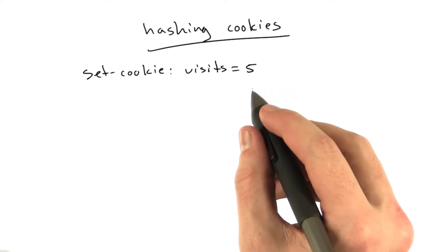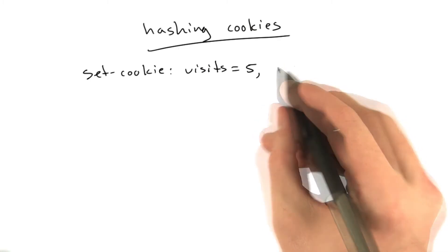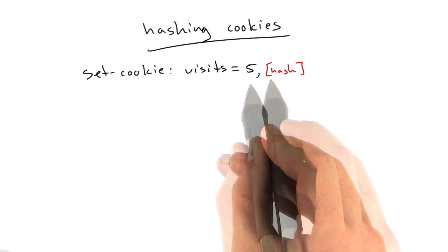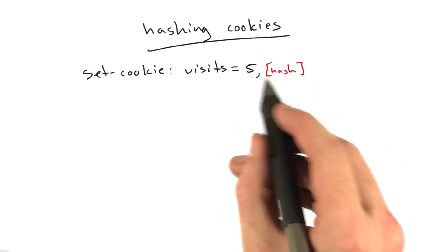So we're going to send something like this instead. Set cookie equal 5. We're going to add something on the end of this, so we'll add a comma, and then we're going to add a hash of the value here, 5, so that a would-be cheater can't forge a cookie without knowing what hashing algorithm we used.